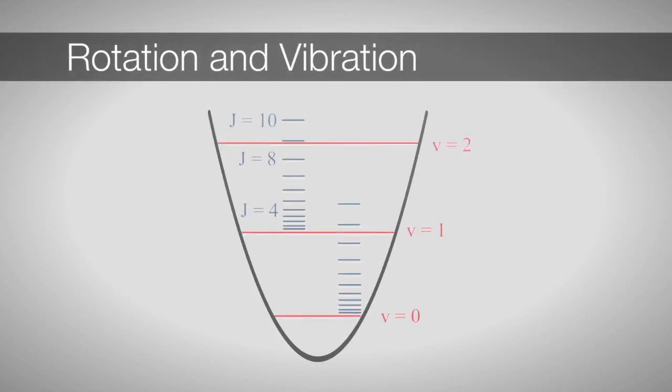The energy required to excite rotations is much smaller than that required for vibrations. Therefore, when we excite vibrations, we also excite rotations. When rotational and vibrational transitions can be observed together, we say we are performing rovibrational spectroscopy. In the simplest case, the rovibrational energy levels are best described as a sum of the two independent models, the harmonic oscillator and the rigid rotor.